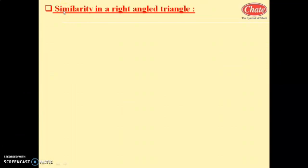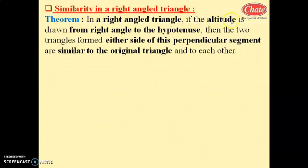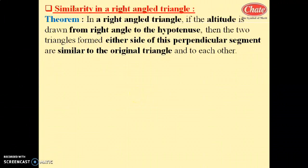We know that when two triangles are similar to each other. The first point is to recognize similarity in right angle triangle. The theorem states: in a right angle triangle, if the altitude is drawn from the right angle to the hypotenuse, then the two triangles formed on either side of this perpendicular segment are similar to the original triangle and similar to each other. We have to prove this.